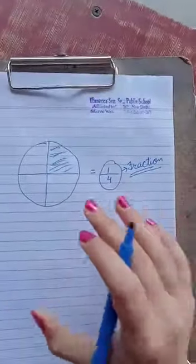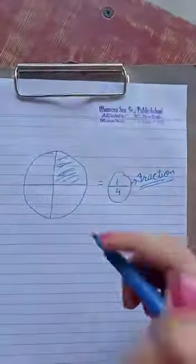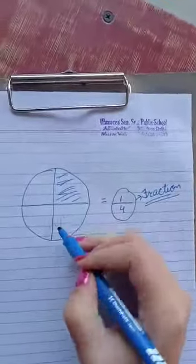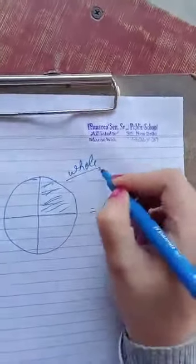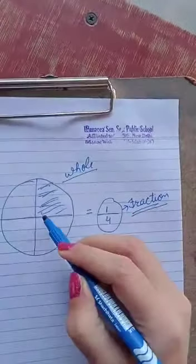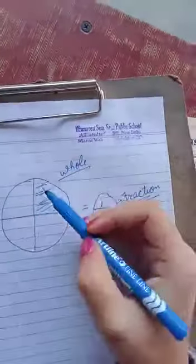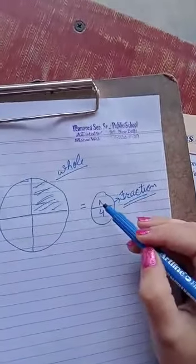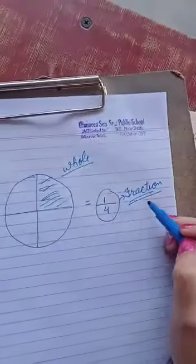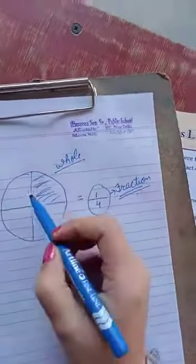A fraction is the part of the whole. This full pizza is called whole (W-H-O-L-E), and the part which we eat, or if we cut it in parts, one part of the whole is called a fraction.